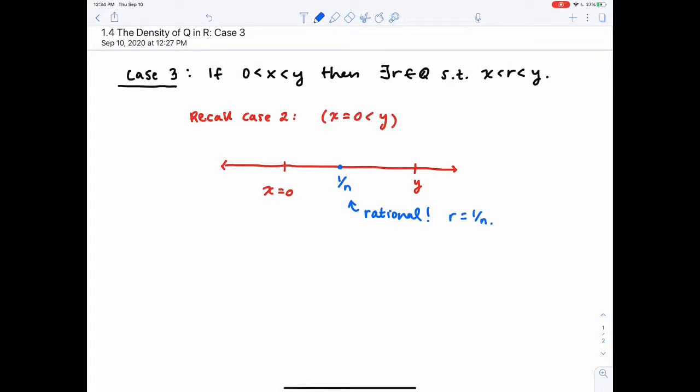We are applying the Archimedean property part 2 to say there has to exist an n in the natural numbers, such that 0 is less than 1 over n, which is less than y. But remember, 0 is just our x value.